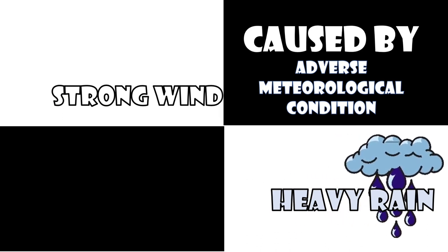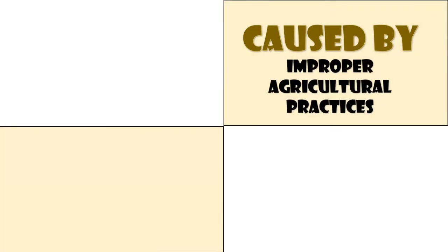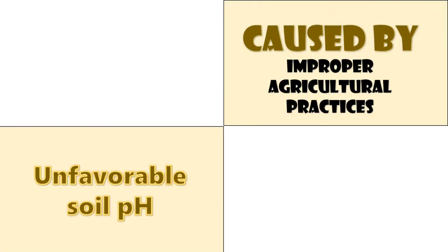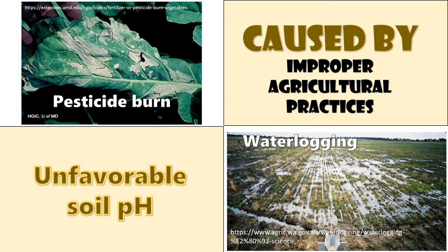Adverse meteorological conditions such as strong wind, heavy rains, and lightning result in ripped and torn water-soaked leaves, burnt trees, and stunted plants. Improper agricultural practices such as unfavorable soil pH, improper use of pesticides, and lack of or excess moisture also cause plant diseases.